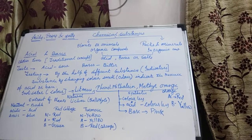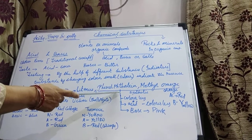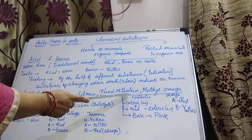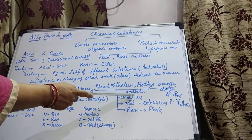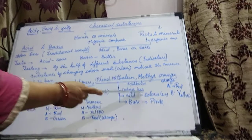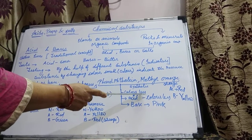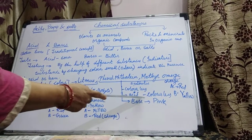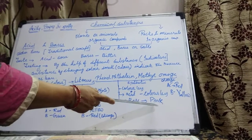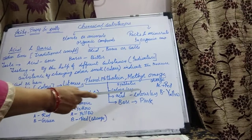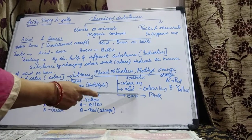Natural indicators — three we have taken. Now I am coming to artificial or man-made indicators, which also change their color in different mediums with acids and bases. Phenolphthalein, which is a synthetic indicator, is colorless in neutral medium — transparent, like water. In acid, it remains colorless with no change in color. But with base, it changes from colorless to pink. So colorless to pink indicates base, and colorless to colorless indicates acid.